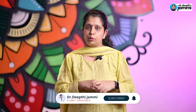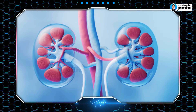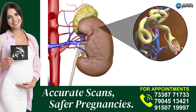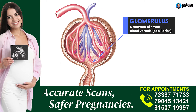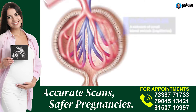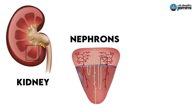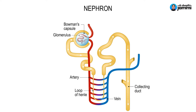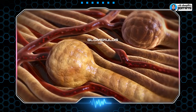The functional unit of the kidney is called the glomerulus. There are many finger-like projections associated with structures called nephrons. These are surrounded by a structure called Bowman's capsule.